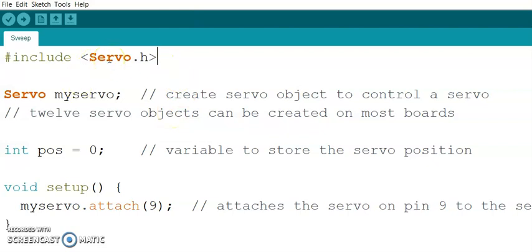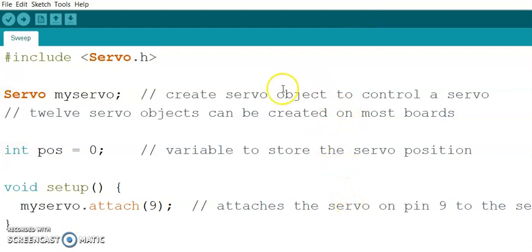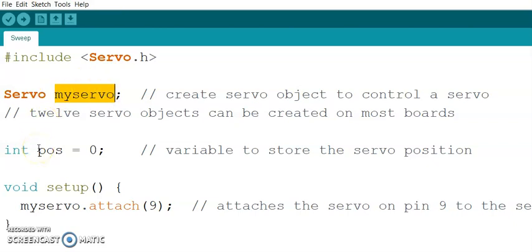Here, myServo is nothing but an object created for the servo motor. Similar to this, you can create different objects. If you are going to use two servo motors, the statements would be: Servo myServo1 and Servo myServo2. You can connect up to eight servo motors with this Arduino, requiring eight statements from Servo myServo1 up to Servo myServo8. Servo motor one is represented by myServo1 and servo motor eight by myServo8.